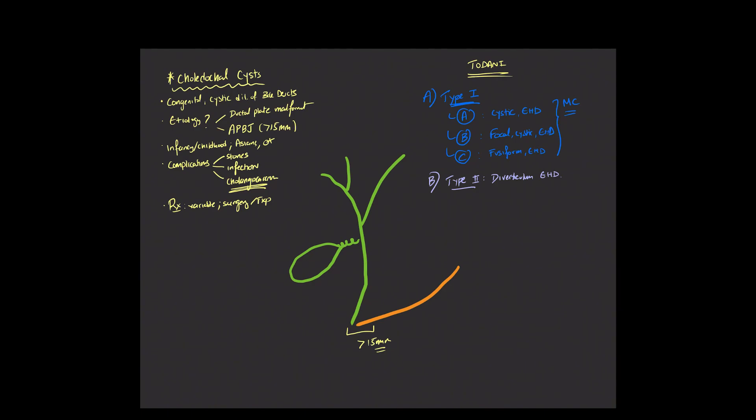The next type is a type 3 choledocal cyst. This is also known as a choledococele. And this really represents a focal dilatation involving the intraduodenal segment of the extrahepatic biliary tree. So if you follow the distal most portion of the common bile duct, as it enters the duodenum, right over there, you'll see a focal cystic dilatation. And that's going to be known as a type 3 choledocal cyst.